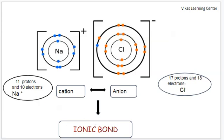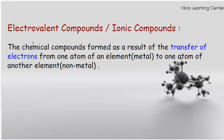This ionic bond eventually leads to the formation of ionic compounds. So we can define ionic compounds as the chemical compounds that are formed as a result of the transfer of electrons from one atom of an element that is a metal to one atom of another element that is a non-metal.